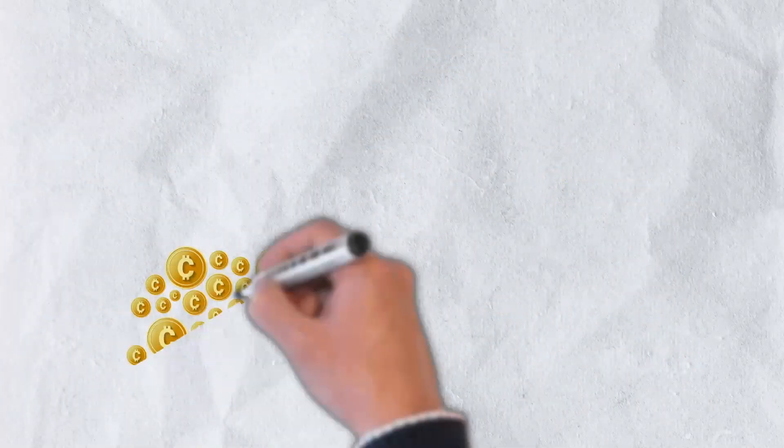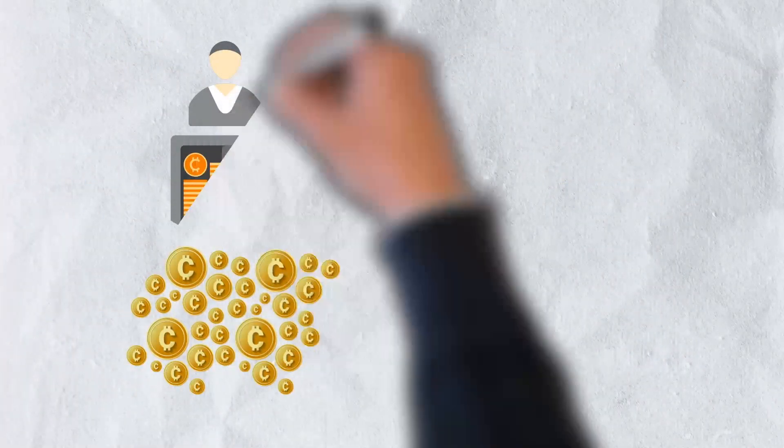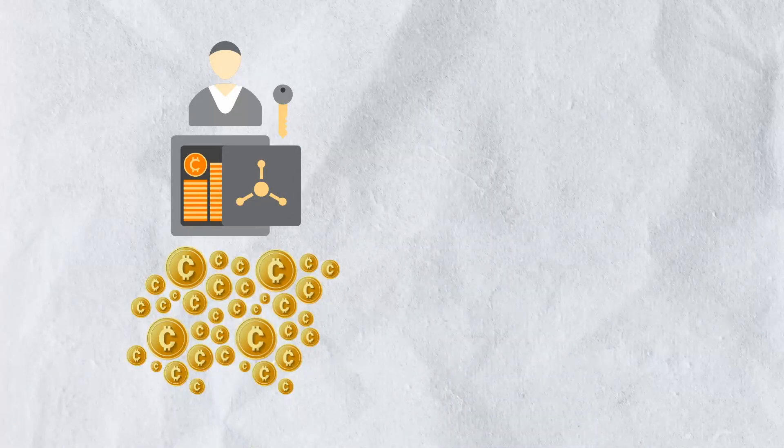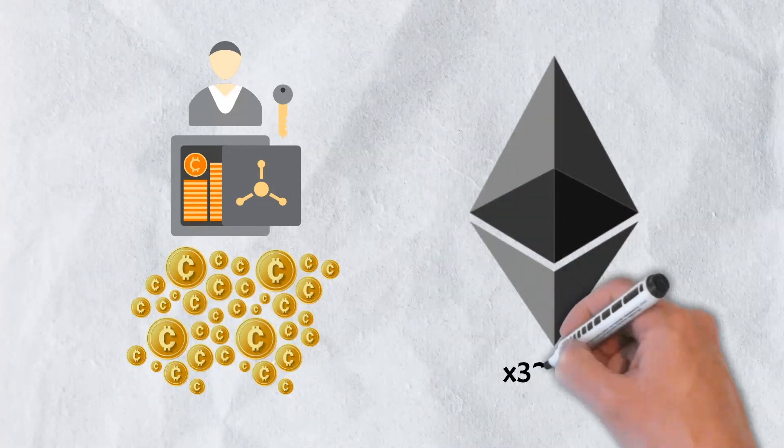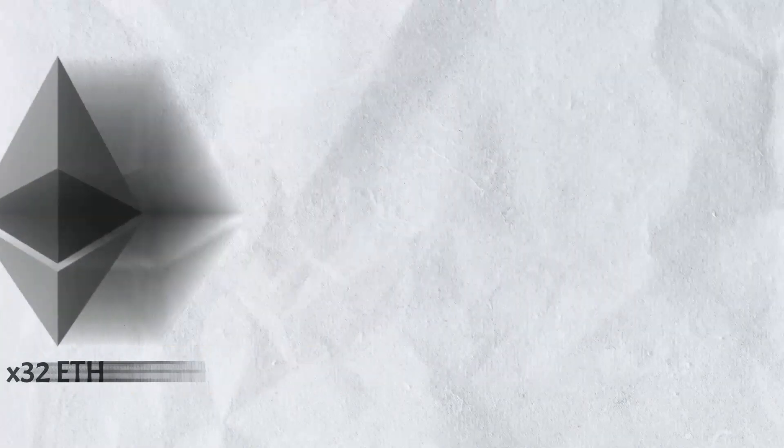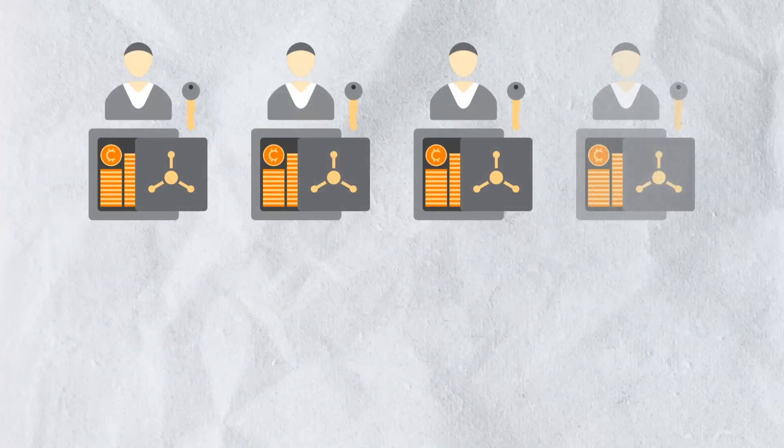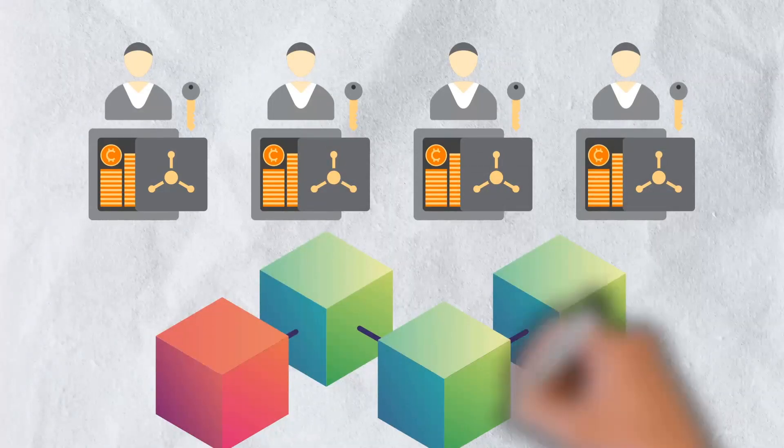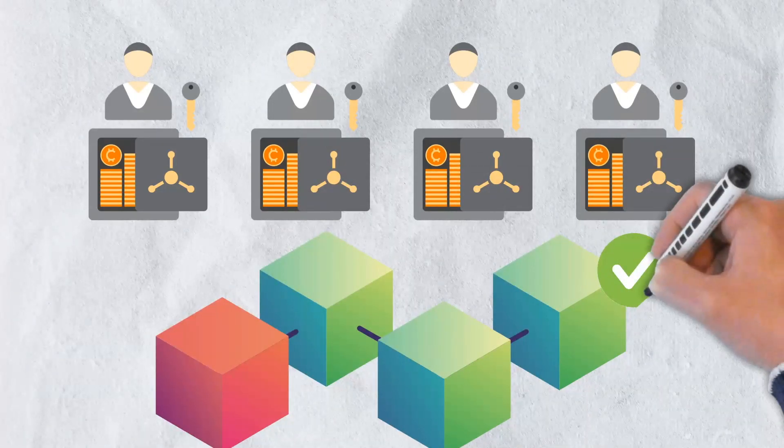A coin owner must stake a certain amount of coins to become a validator. Before a user can become a validator on Ethereum, for example, they must stake 32 Ether. Blocks are validated by multiple validators, and they are finalized and closed when a specific number of validators confirm that the block is correct.